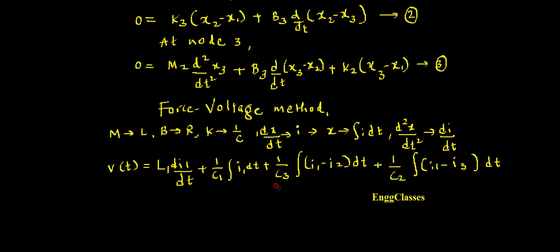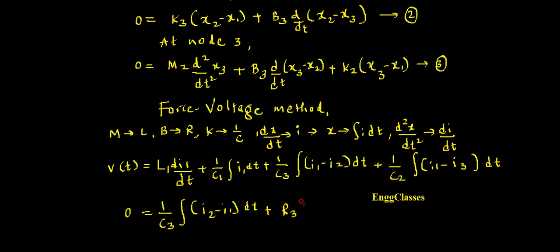Applying force-voltage replacements to the second equation: 0 = (1/C3)·∫(i2 - i1)·dt + R3·(i2 - i3). This is the result from the second equation. From the third equation: 0 = L2·(dI3/dt) + R3·(i3 - i2) + (1/C2)·∫(i3 - i1)·dt.